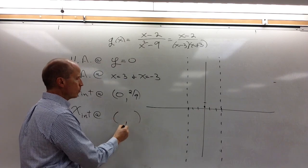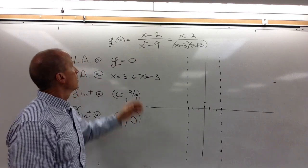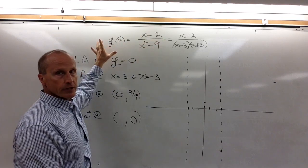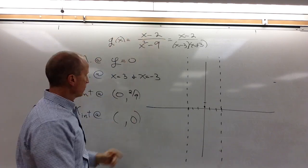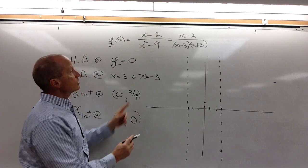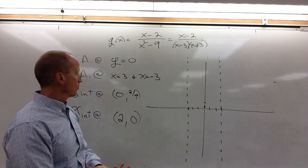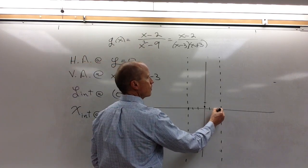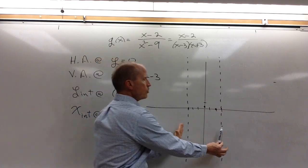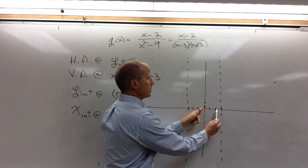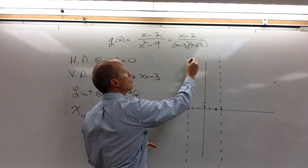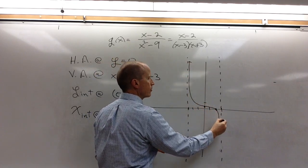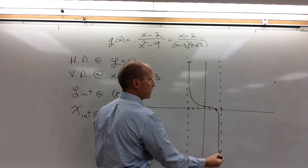The x-intercept — put zero in for y. The only way a fraction can equal zero is if the numerator is zero. What makes the numerator zero? When x is 2. So I know it crosses the x-axis at 2. Now I have to approach these asymptotes and cross the axes at my intercepts, so we really have no choice how we draw the graph in the center. It would look something like this.